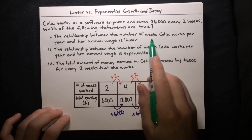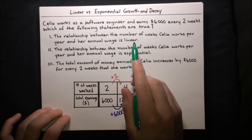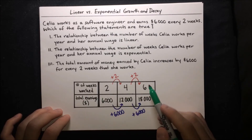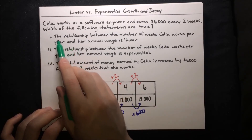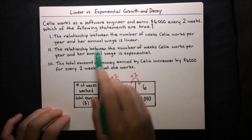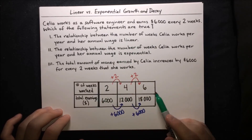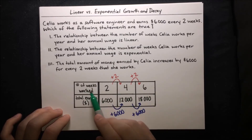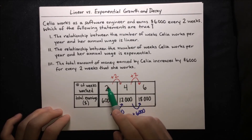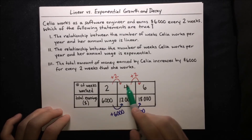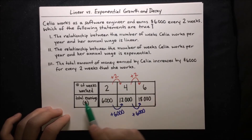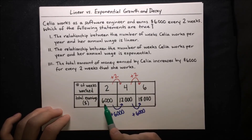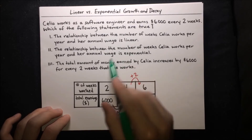Now let's evaluate the statements. Statement 1: the relationship between the number of weeks Celia works and her annual wage is linear. Linear means adding a constant amount per increase in x. Here the number of weeks increases in chunks of two, and total earnings increase by $6,000 each time. So yes, it is linear — she earns $6,000 for every two-week unit increase.